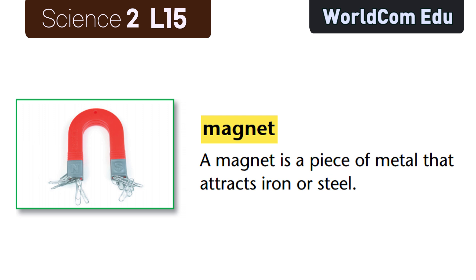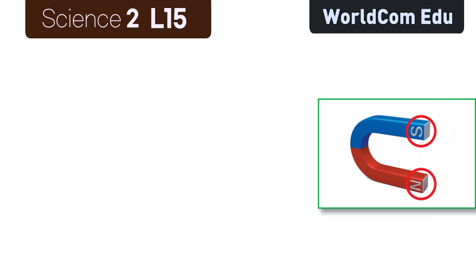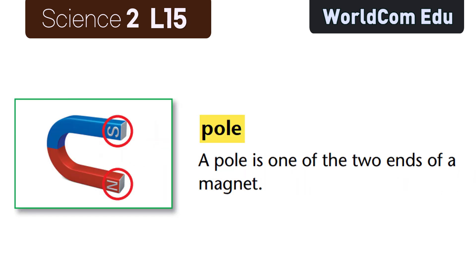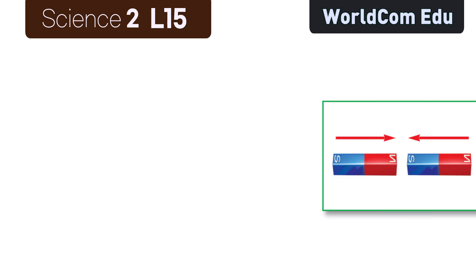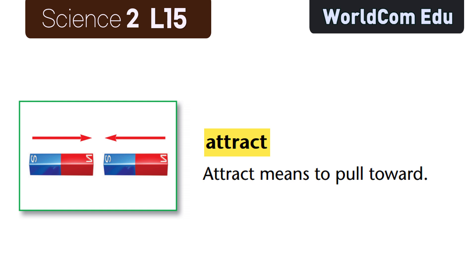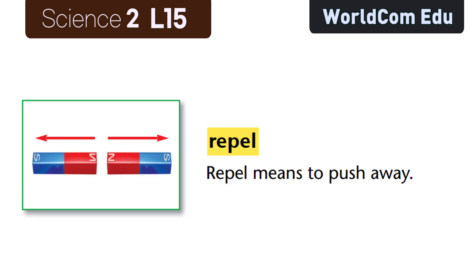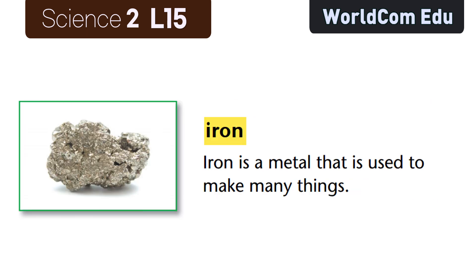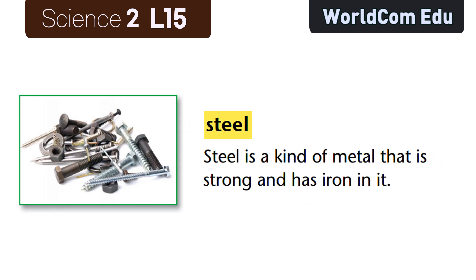A magnet is a piece of metal that attracts iron or steel. A pole is one of the two ends of a magnet. Attract means to pull toward something. Repel means to push away. Iron is a metal used to make many things. Steel is a kind of metal that is strong and has iron in it.